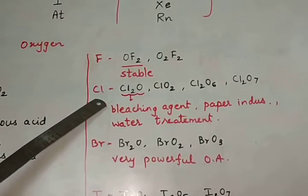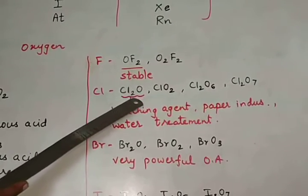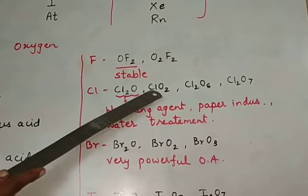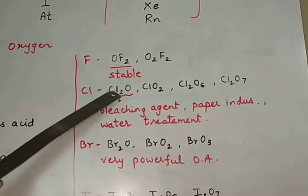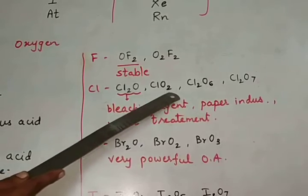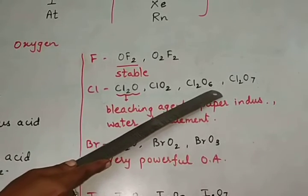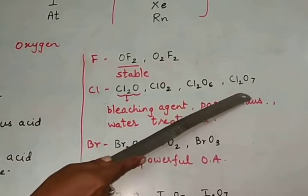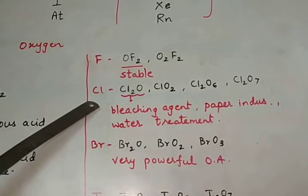Chlorine can form oxides of the type Cl2O, dichlorine monoxide, ClO2, chlorine dioxide, Cl2O6, and Cl2O7. These are different oxides which are formed by chlorine.